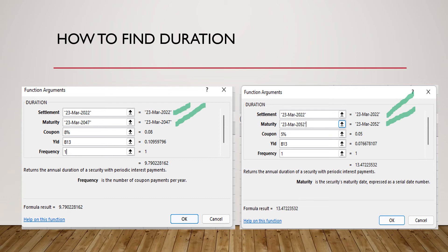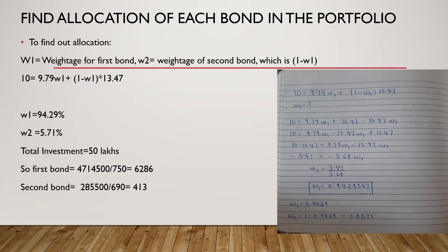The third step is find allocation of each bond in the portfolio. This is very critical. To find allocation you have to assume that there are the weightages for both the bonds. Weightage of the first one will be taken as w1 and w2 is the weightage of the second bond which can also be written as 1 minus w1 because whatever is not the weightage of first is the weightage of second.